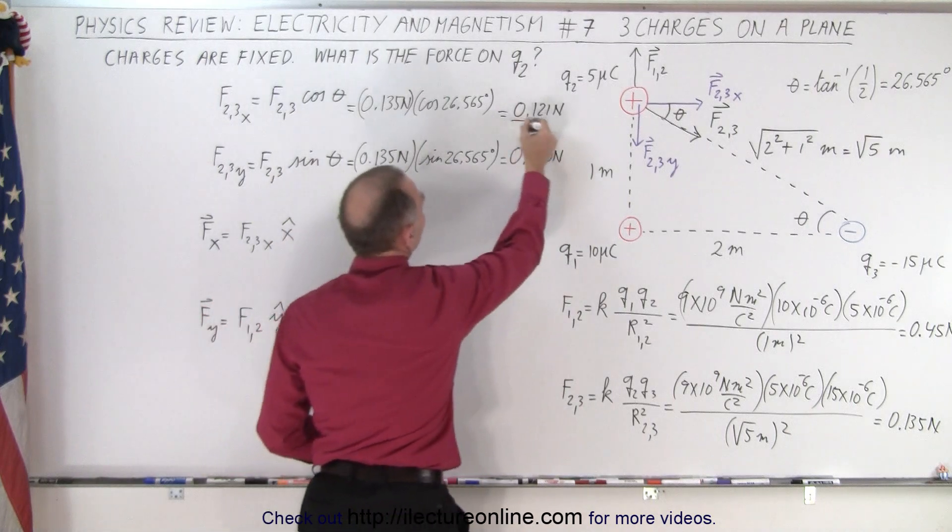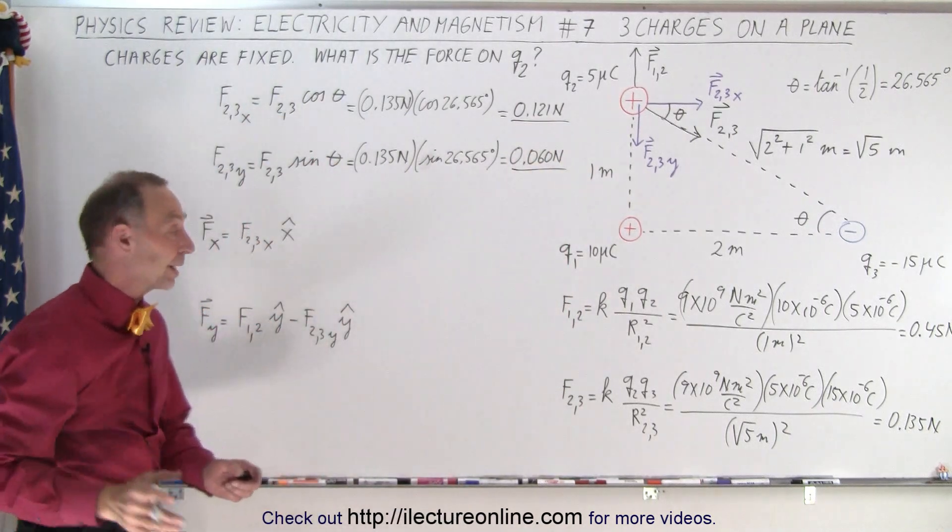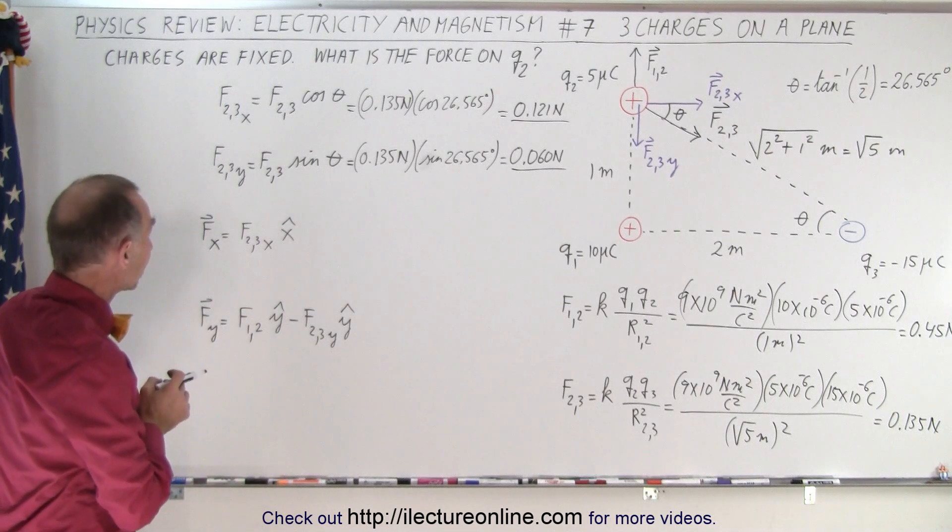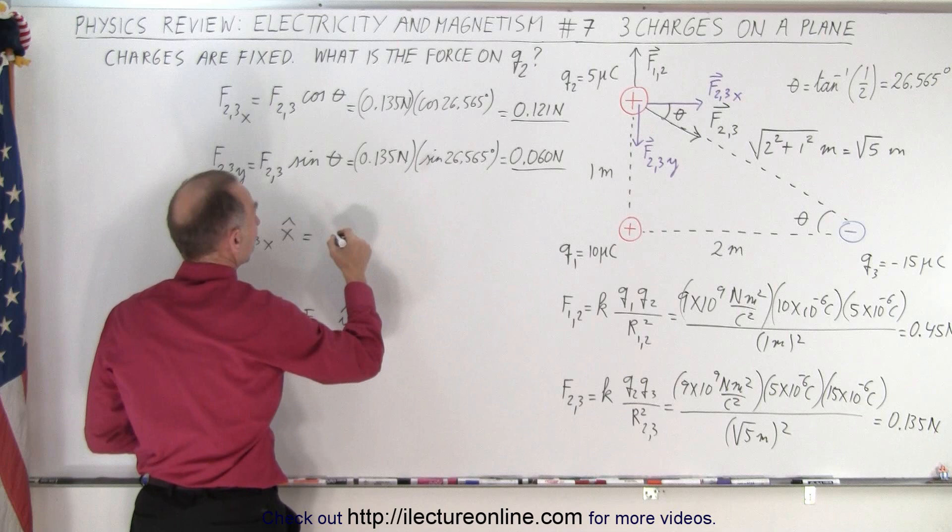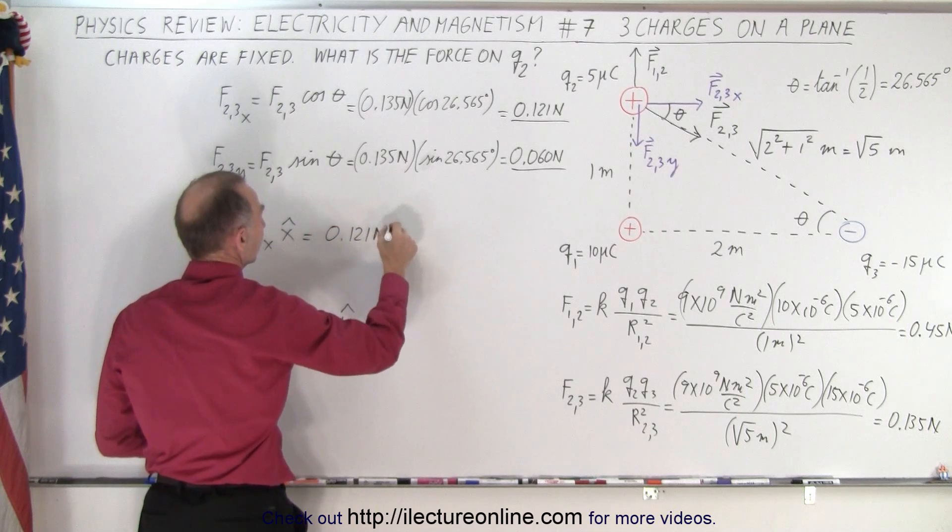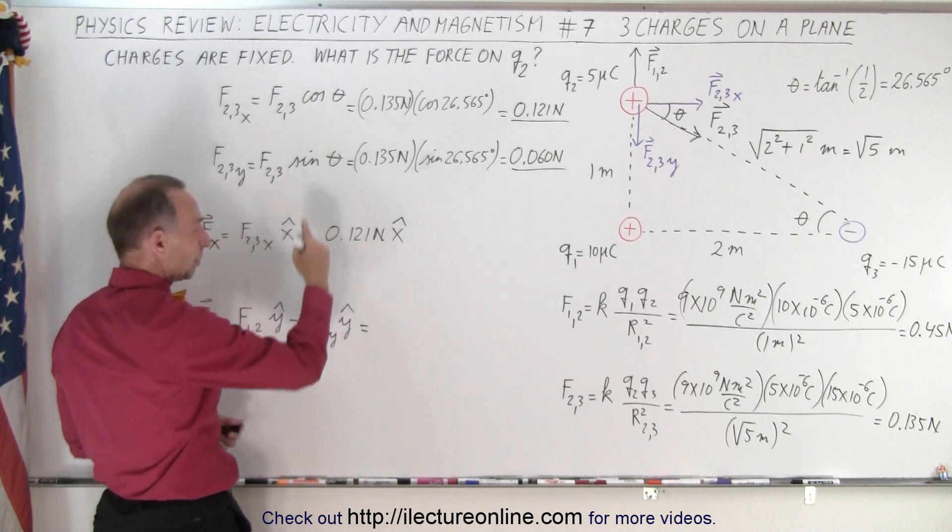So now we have the x and y component of the diagonal force, and now we're ready to add all the x and y components. Notice we only have one x component, so this is equal to 0.121 newtons in the x direction. And for the y component here, we have two, we have one going up, which is this one right here,